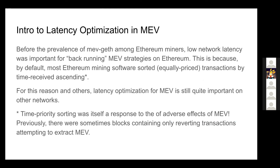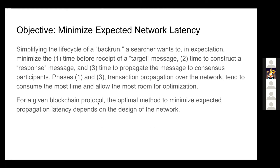Just for a little bit of history — I'm sure a lot of the audience is aware — before the merge, geth was big and network latency optimization was quite important. It isn't as much now on Ethereum, but it still is on other networks. I'm going to be focusing on Avalanche because it is still quite important, and I'll discuss how changes in Avalanche's protocol design drove searchers to change their methods to minimize network latency.